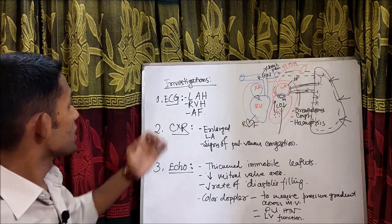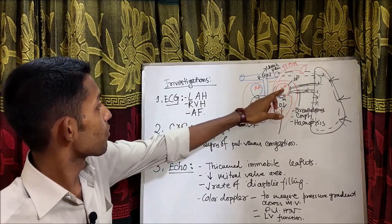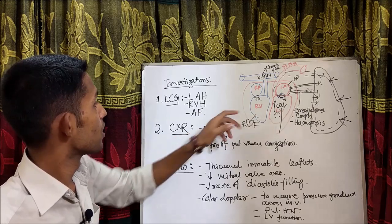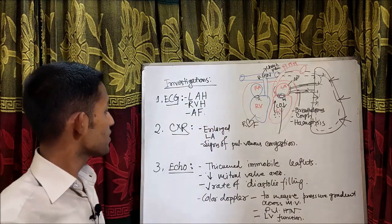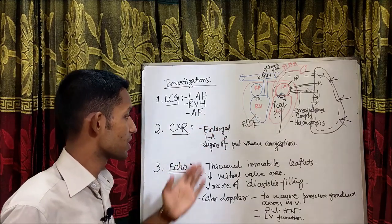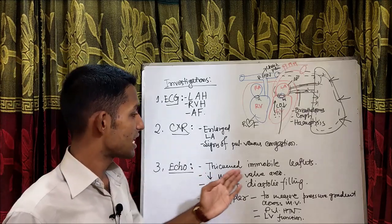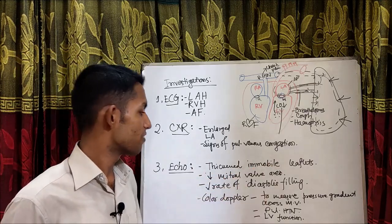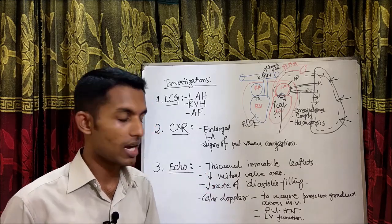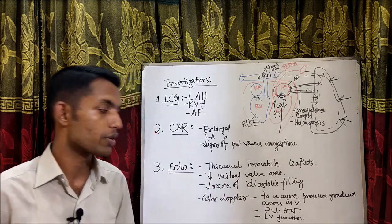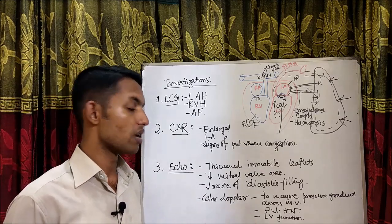Investigations for mitral stenosis: on ECG — left atrial hypertrophy, right ventricular hypertrophy, or atrial fibrillation. On chest X-ray — enlarged left atrium and signs of pulmonary venous congestion. On echocardiogram — thickened immobile leaflets, decreased mitral valve area, and decreased rate of diastolic filling. Color Doppler is used to measure the pressure gradient across the mitral valve and to assess pulmonary hypertension and left ventricular function.